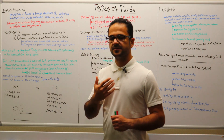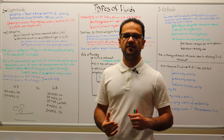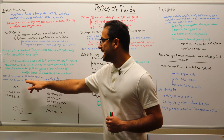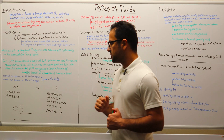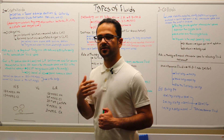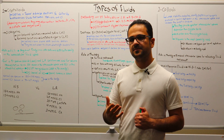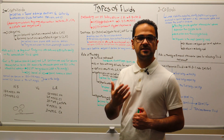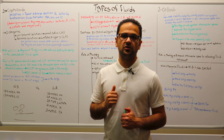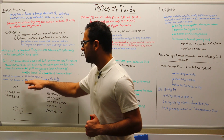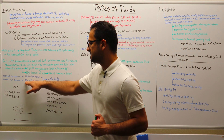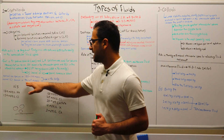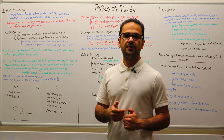Normal sodium serum in the body is between 135 to 145 milliequivalent per liter. Normal chloride serum in the body is between 98 to 109 milliequivalent per liter. If a patient has a value less than 135 for sodium, that is hyponatremia. If it's higher than 145, it's called hypernatremia. Similarly for chloride: less than 98 is hypochloremia, and higher than 109 is hyperchloremia.